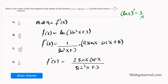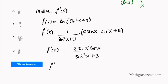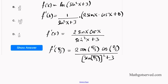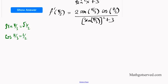We need the slope when x = π/3. So f'(π/3) = 2 sin(π/3) cos(π/3) divided by sin²(π/3) plus 3. We know that sin(π/3) = √3/2 and cos(π/3) = 1/2. Plugging those in, we get 2 times (√3/2) times (1/2) divided by (√3/2)² plus 3.